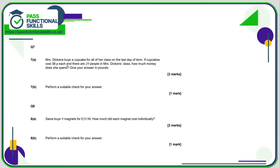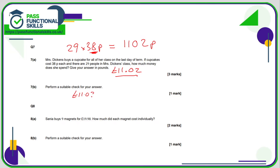Question seven — we are allowed to use a calculator. We multiply 29 times 38 pence; since the price is in pence, the answer will be in pence: 1102 pence. To turn that into pounds, divide by 100 — that's £11 and 2p. For a suitable check: since multiplication and division are inverse operations, £11.02 divided by 38 should give 29, or £11.02 divided by 29 should give 38p.